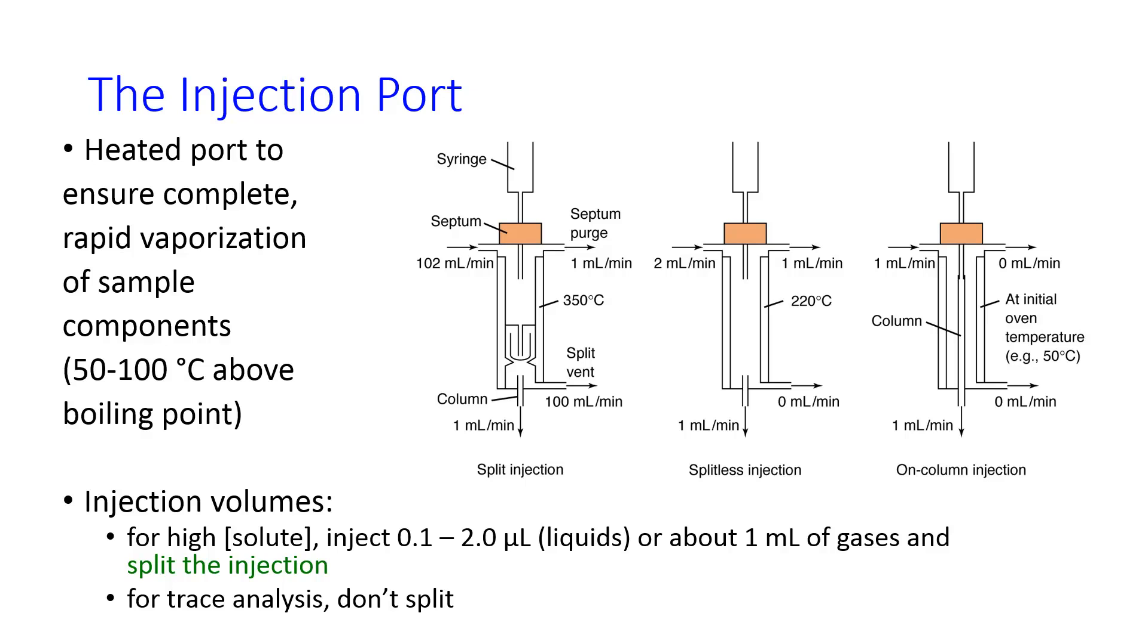When you have a high solute concentration, you can do what's called a split injection, where most of your injection goes to waste, and then a very small percentage goes onto the column. If you're doing a trace analysis where you have a very low solute concentration, you would not want to split, but you can inject directly onto the column.